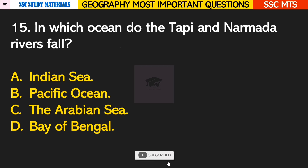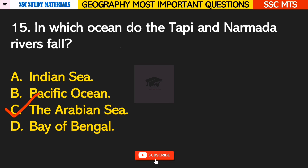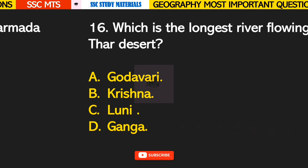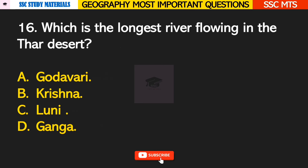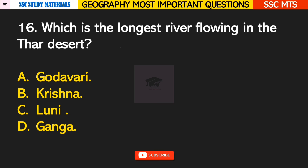Question number 15: in which ocean do the Tapi and Narmada rivers fall? Answer C — they fall in the Arabian Sea. Question number 16: which is the longest river flowing in the Thar Desert? Answer C — Looney River.